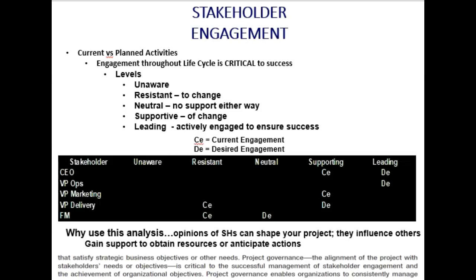In the stakeholder engagement process, stakeholders have various levels: they're unaware, resistant, neutral, supportive, or even leading. I've given you an example — across the top are these engagement levels. CE is their current state and DE is the desired engagement state. Not everybody needs to be moved to the right — not everybody has to be supporting or leading. Sometimes you just want them in the neutral portion, like moving the finance manager from resisting to neutral — stop talking bad about the project. Understand their concerns, and that's how I'd use this stakeholder engagement chart.